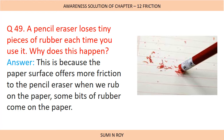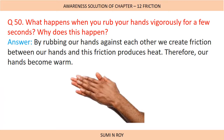Question 49: A pencil eraser loses tiny pieces each time you use it — why does this happen? This is because the paper offers more friction to the pencil eraser when we rub it on the paper, and some bits of rubber come onto the paper. You might have seen broken pieces of the eraser on the paper — this is due to friction. Next question: What happens when you rub your hands vigorously for a few seconds? By rubbing our hands against each other, we create friction between our hands and this friction produces heat, therefore our hands become warm.